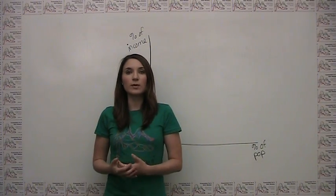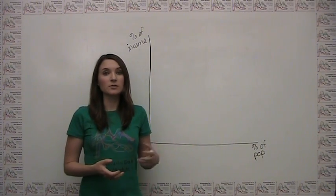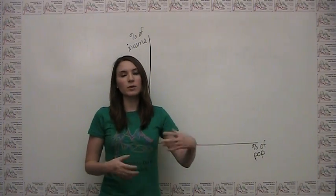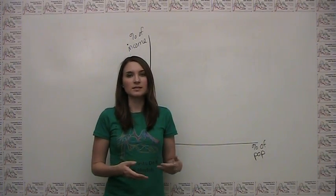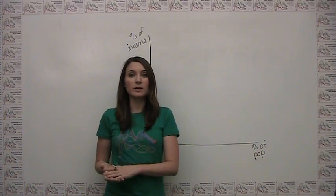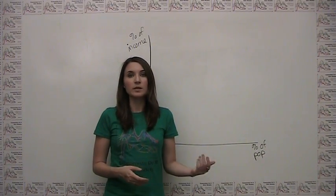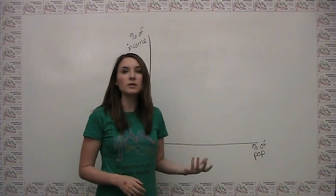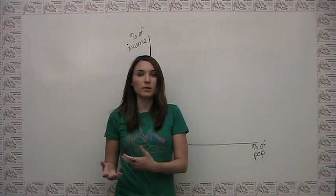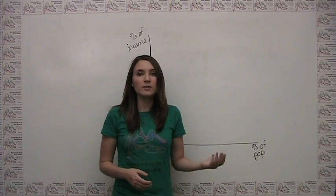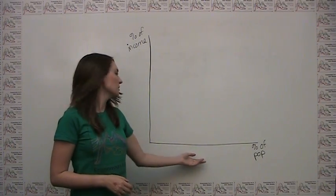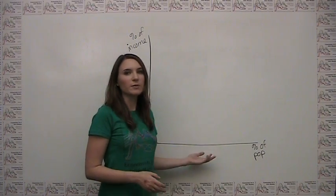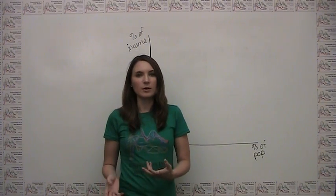The Lorenz curve is a simple way to describe income distribution using a two-dimensional graph. To do this, imagine lining people or households in an economy up in order of income from smallest to largest. The horizontal axis of the Lorenz curve is then the cumulative percentage of these lined up people being considered. For example, the number 20 on the horizontal axis would represent the bottom 20% of income earners. The number 50 would represent the bottom half of income earners and so on.